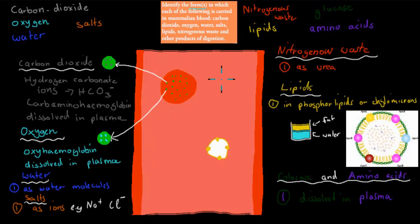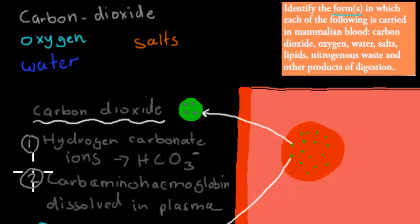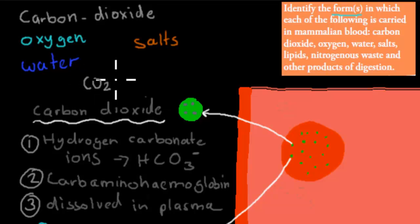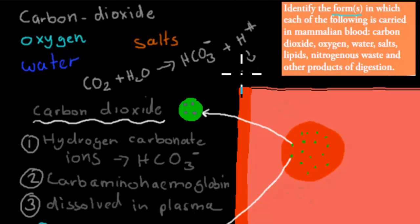Here we have our blood vessel — it could be a capillary, artery, or vein. Carbon dioxide can travel in one of three forms. I'll number them from one to three based on likelihood. Most of it is found as hydrogen carbonate ions (HCO3−). When CO2 reacts with water (H2O) in the plasma, it forms HCO3− ions and H+ ions. The H+ makes it acidic. The main form carbon dioxide travels is as this hydrogen carbonate ion in plasma.